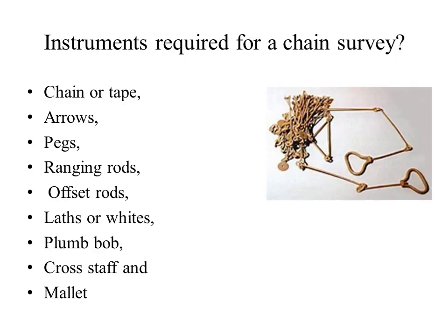The different instruments used for chain surveying are: chain or tape for measuring the distance; arrows to fix a point after a chain is laid; pegs to mark the station points; ranging rods to represent the points on the chain line; offset rod used for measuring the offset length; latches or pins for fixing the points; plumb bob to check verticality; cross staff used for taking the offset; and mallet used for fixing the pegs in the ground.